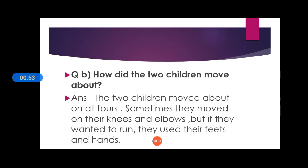The answer is the two children move about on all fours. Woh apnei charon paon par chal kar chalte thay, do haathon se aur do paon se. Sometimes they move on their knees and elbows. Kabhi kabhi wo apnei takhnoe aur apnei kohnioe ke saath chalte thay. But if they wanted to run, they use their feet and hands.